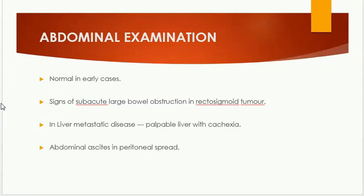On abdominal examination, findings are normal in early cases. Occasionally, in patients with stenosing tumors at the recto-sigmoid junction, there are signs of sub-acute large bowel obstruction with abdominal distension. If large-volume liver metastases are present, the liver may be palpable. It may also be possible to elicit ascites on physical examination.